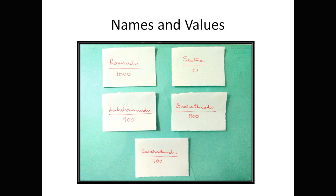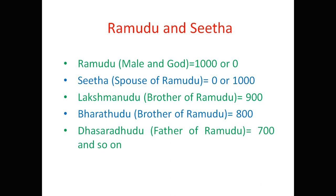This game can also be played with many people. The more people involved, the more interesting the game will be. The value for Ramudu may be either 1000 or 0 — that depends upon the game. And for Sita, the spouse of Ramudu, the value will be either 0 or 1000, depending on the game.